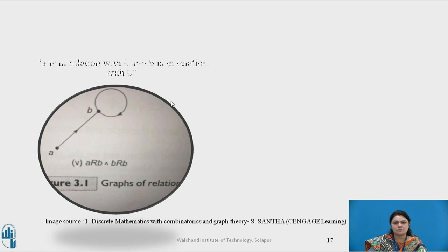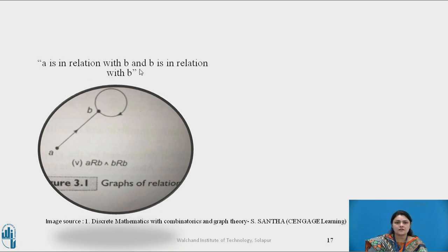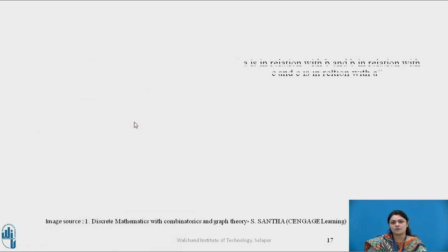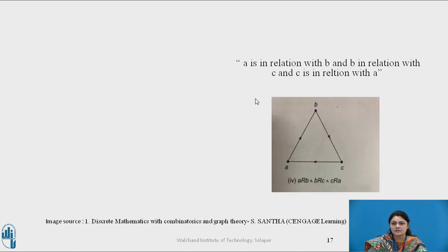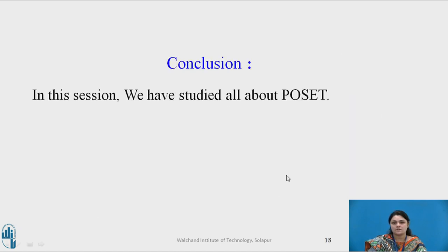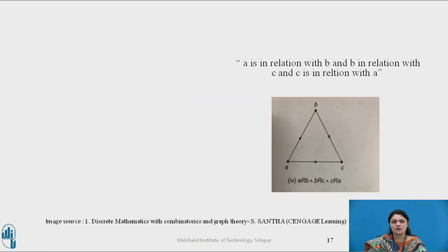Here is one more example: A is in relation with B, and B is in relation with B — so B has a loop. Another example: A is in relation with B, B is in relation with C, and C is in relation with A, forming a cycle.